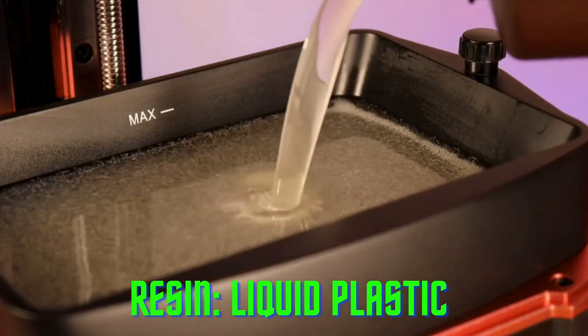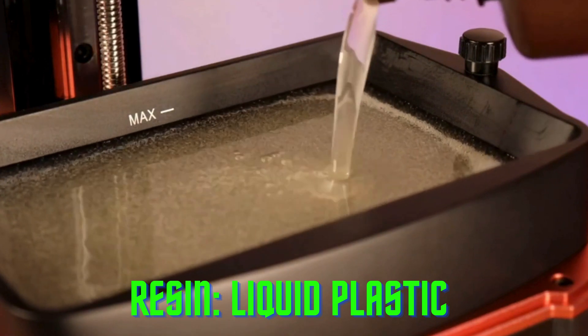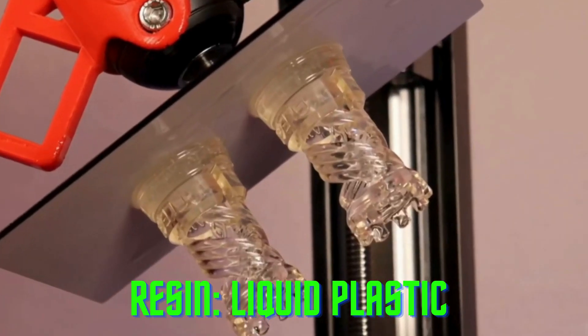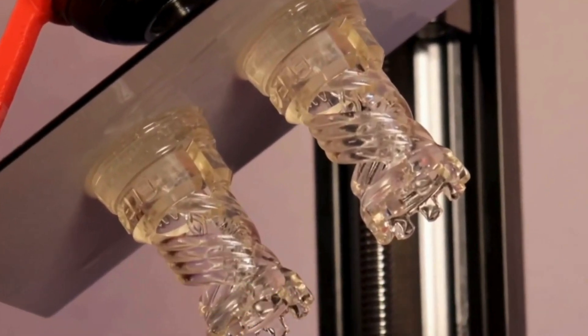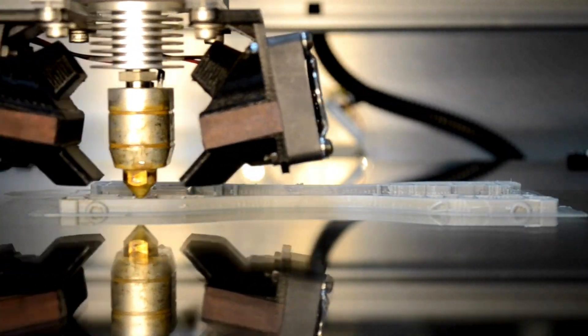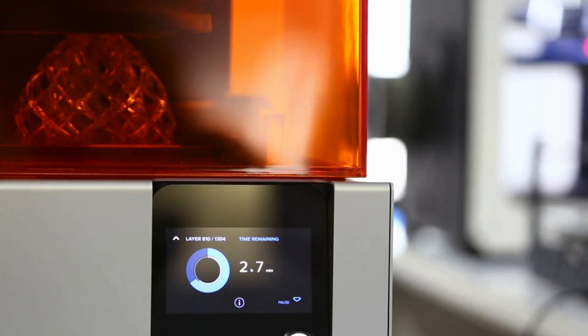One of the main differences is the shape of the printers. Filament printers usually have a rectangular or cubic shape with a moving nozzle and a flat platform. Resin printers usually have a cylindrical or spherical shape with a stationary laser or light source and a tilted platform.